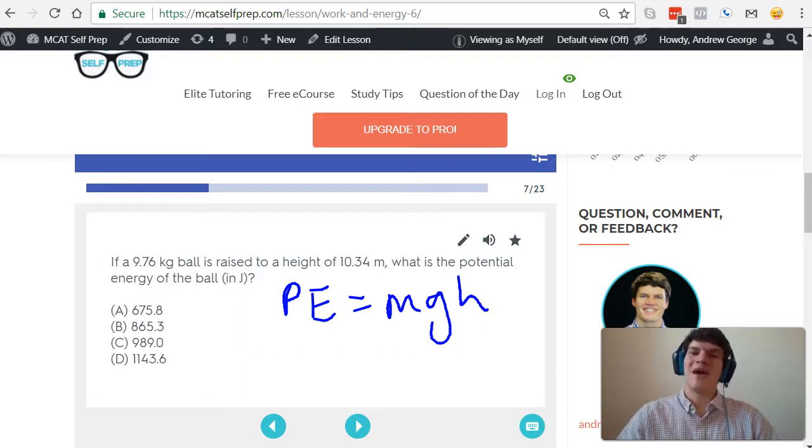But it does not matter how the ball got there. We're dealing with potential energy, and potential energy is equal to the mass of the object times gravity times height. It only matters its position and its mass. So don't worry about all the useless details they might throw at you to try and trick you.